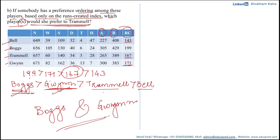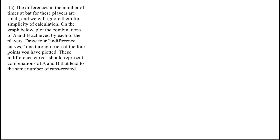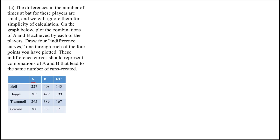Moving on to part three: the differences in the number of times at bat for these players are small, so we will ignore them for simplicity of calculation. On the graph provided, we need to plot the combinations of A and B achieved by each player and draw four indifference curves, one through each plotted point. Since we are ignoring N, the RC formula simplifies to RC equals A multiplied by B.